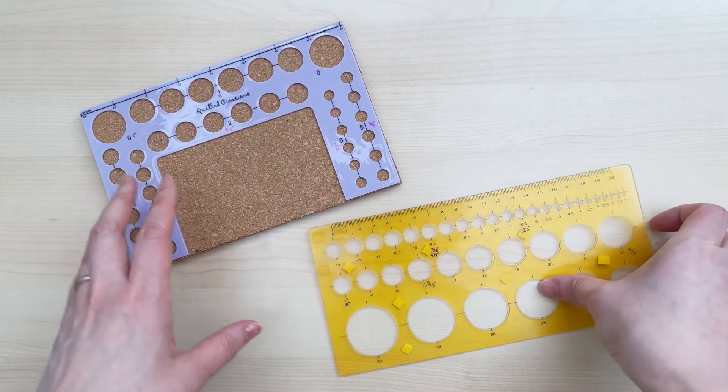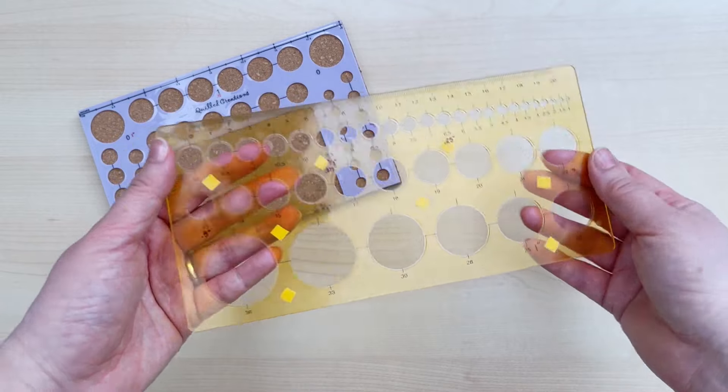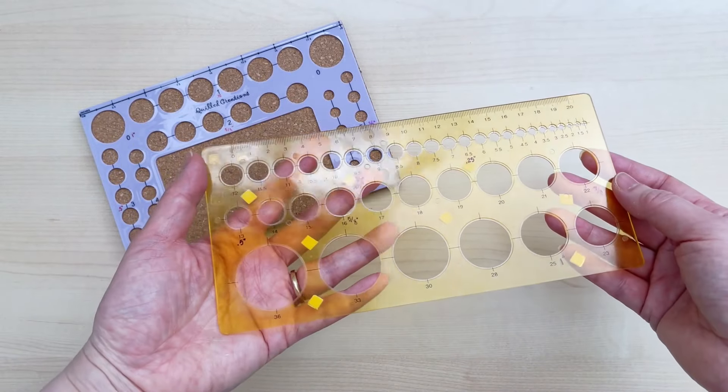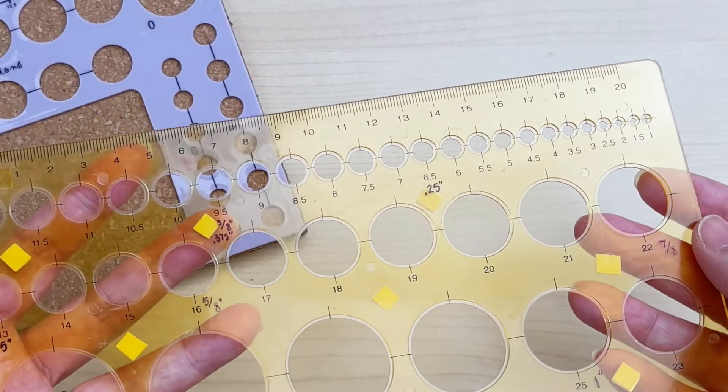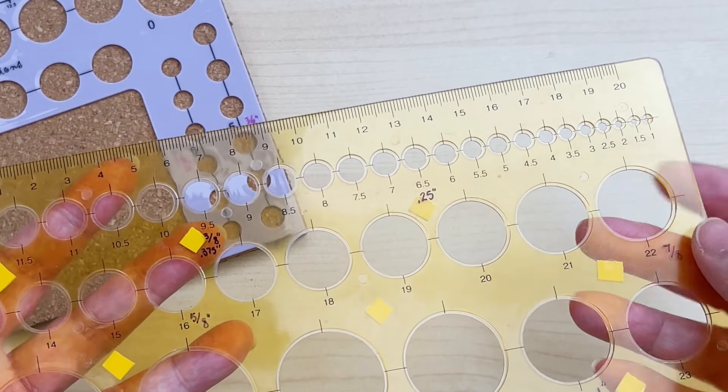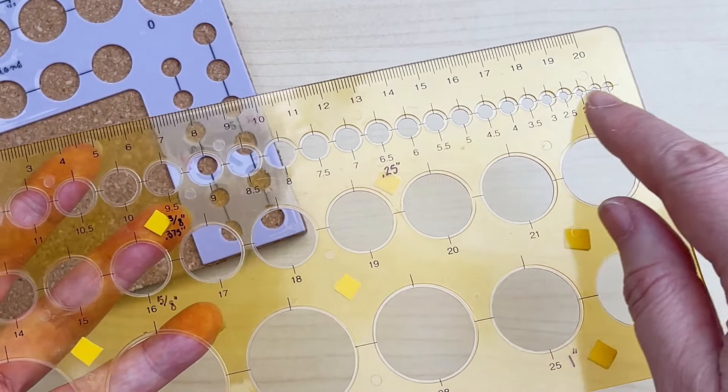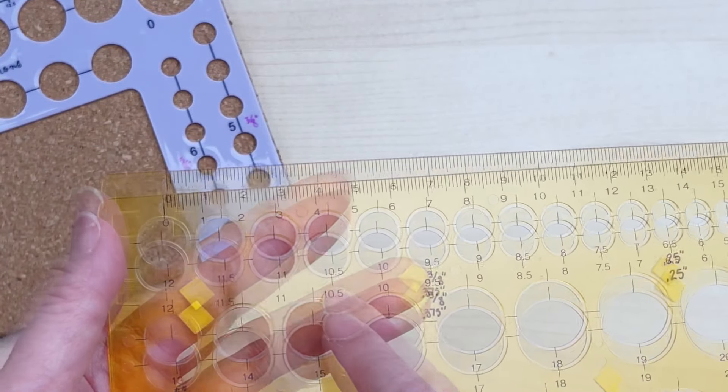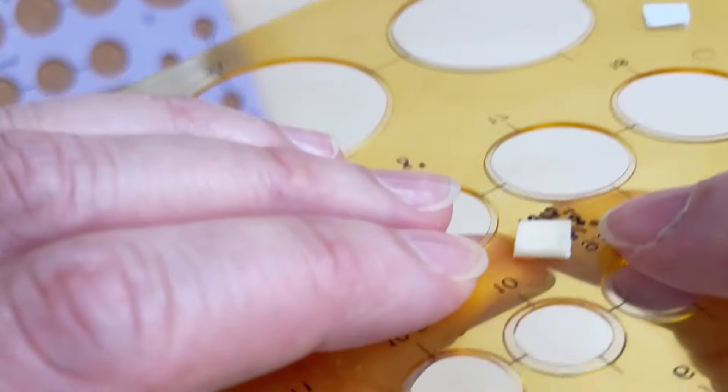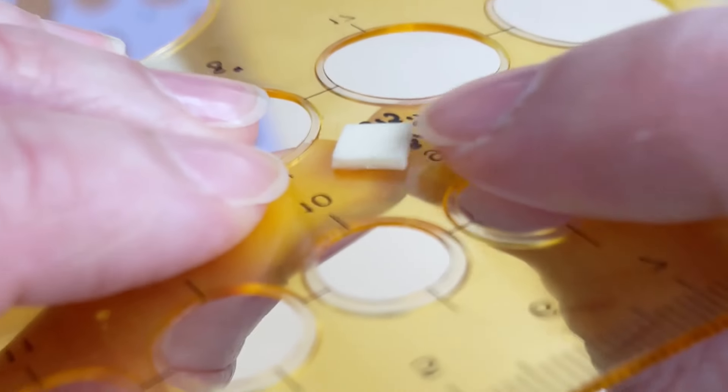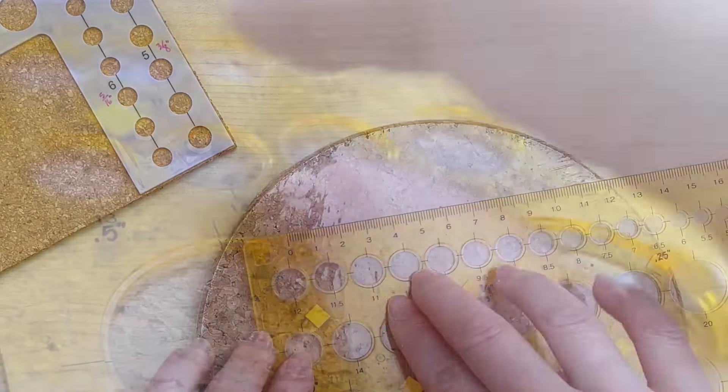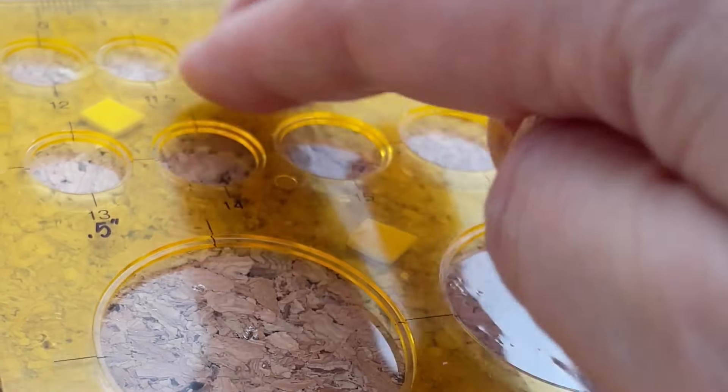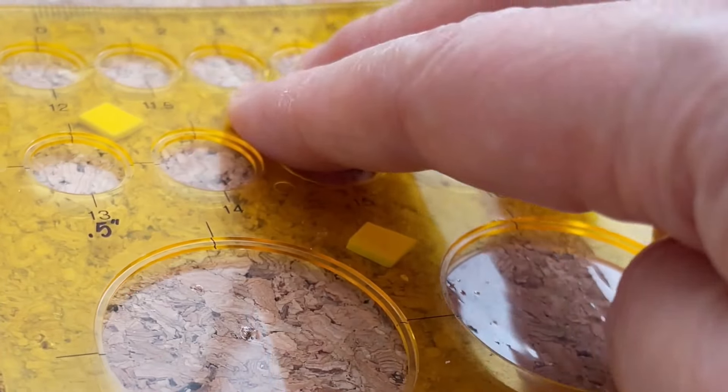This dollar store template only has one of every size, so it doesn't help if you want to make multiples of the same size at the same time. It has too many circles I don't need. These are too small, and I just don't need a circle that's 10.5 centimeters. To keep the coils from springing out, I just add adhesive squares to raise it up, and then I put it on top of a cork trivet, but it does end up bouncing a bit, and that's not a deal breaker, but it's not great.